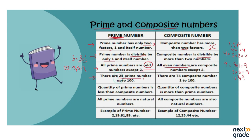From one to one hundred, how many prime numbers are there? Twenty-five. But how many composite numbers are there? Seventy-four. There are seventy-four composite numbers up to one hundred. The quantity of prime numbers is less than composite numbers — composite numbers are more than prime numbers.